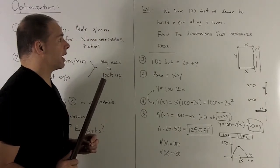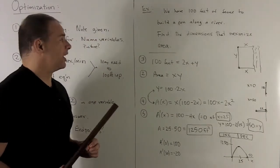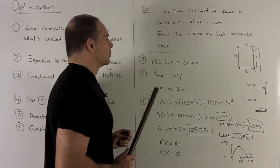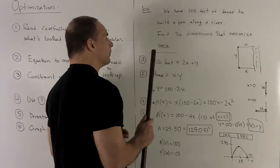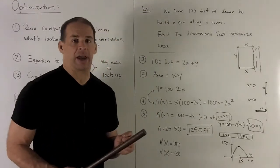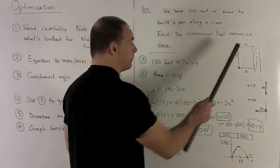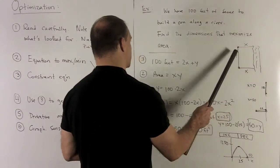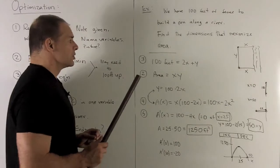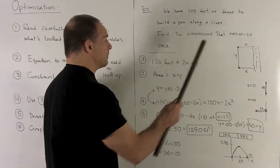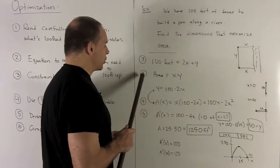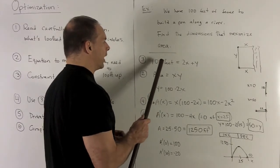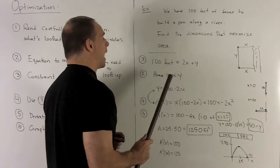What else do we have? So that's going to cover everything in my first sentence. I can't squeeze anything more out of that. So I go to the next sentence, find the dimensions that maximize area. So the big word here is going to be area. So what's going to be the equation for area? Well, we've named variables x and y on a rectangle, so our area is just going to be x times y.